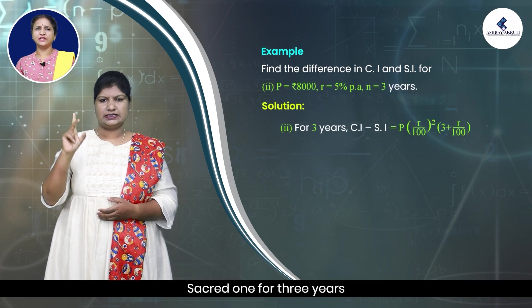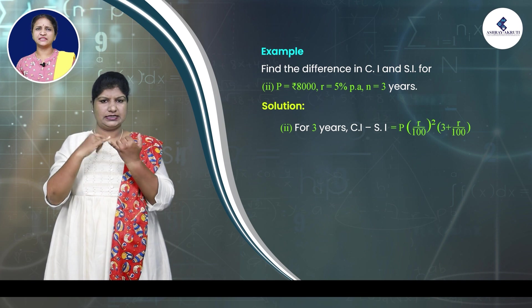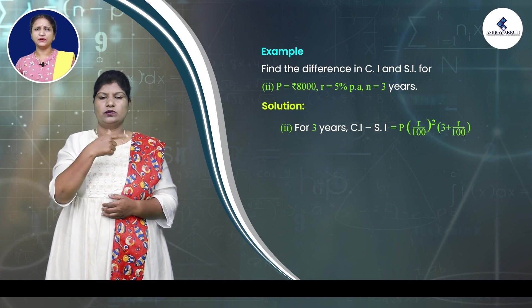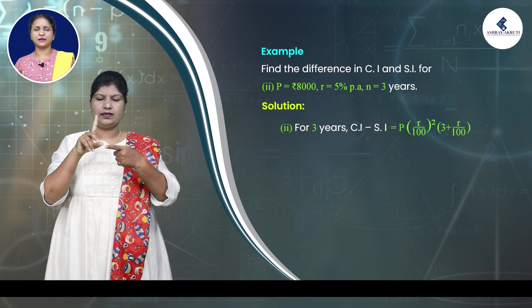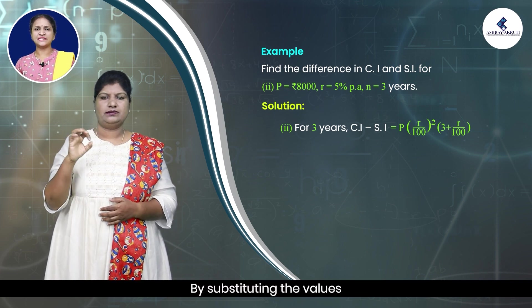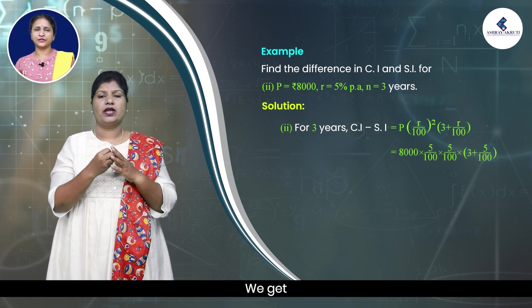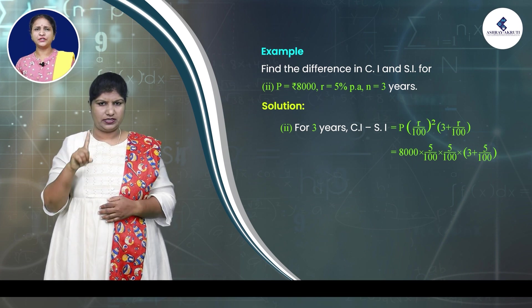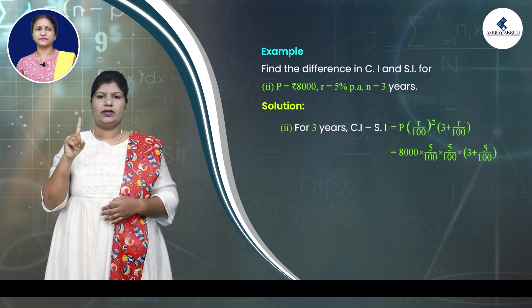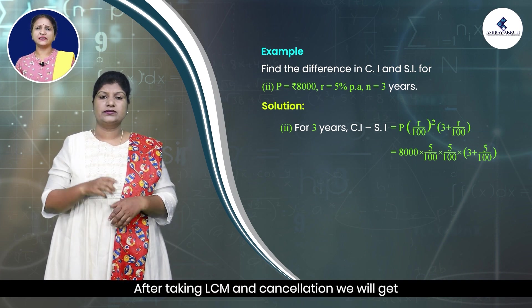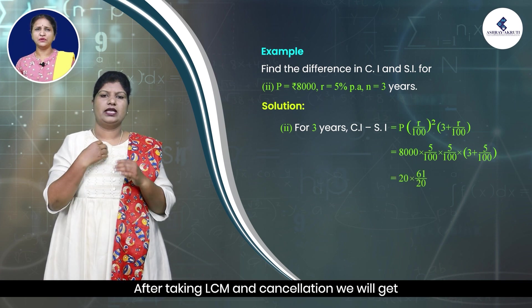Second: for 3 years, CI − SI = P × (R/100)^2 × (3 + R/100). Substituting the values: 8,000 × (5/100) × (5/100) × (3 + 5/100). After taking LCM and cancellation, we get 20 × (61/100).